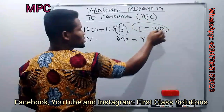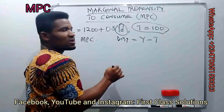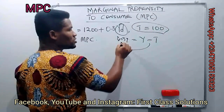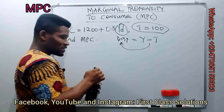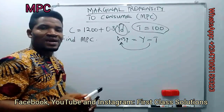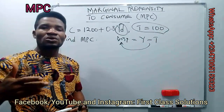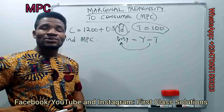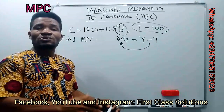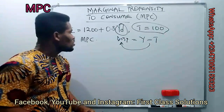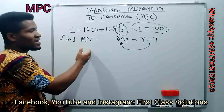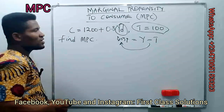That is, the tax given to us here as 100 — income minus the tax gives us our disposable income. This practically implies that once they deduct your income tax from your income, what is left for you is actually meant for you to keep. So let's go forward to find our MPC in this case.